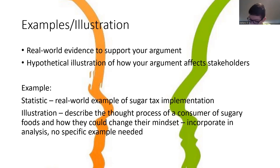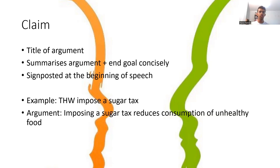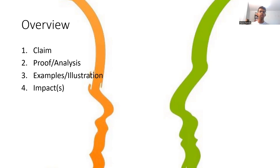Student: So the proof and analysis is done after you state your claim? Instructor: Yeah. Generally speaking, this is probably the order you're going to go in — you'll start off with the claim of what you're trying to prove, then explain the reasons why it's true, going into examples and then finally the impacts.